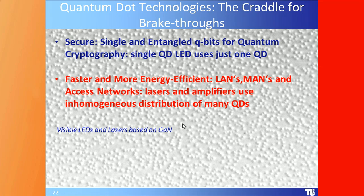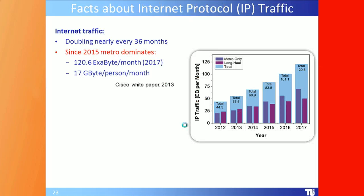Moving to systems — LAN, MAN, and access networks — let's look at whether quantum dot-based devices offer advantages. We need to know some facts about the internet: internet traffic doubles approximately every 36 months.